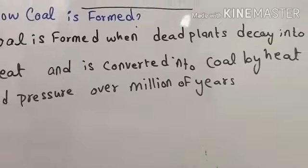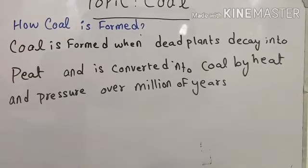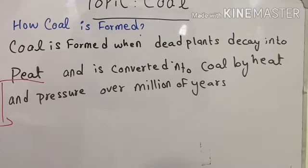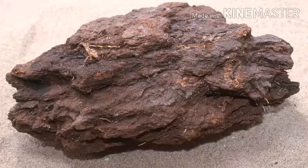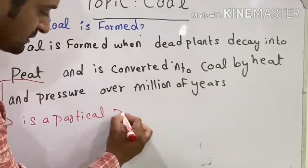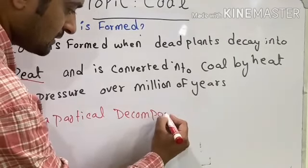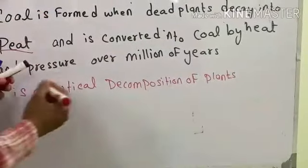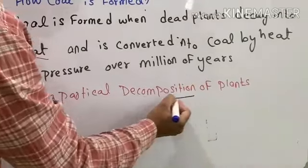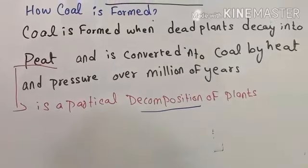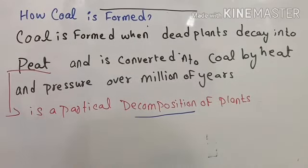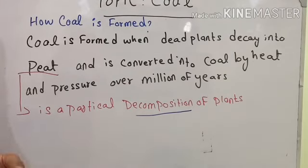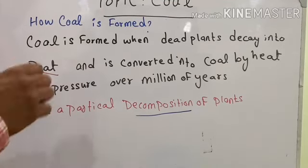There are three things which need to be clear. First, what is peat? Peat is a partial decomposition of plants. Decomposition means a breakdown of organic matter — specifically the breakdown of complex organic matter into simple organic material.